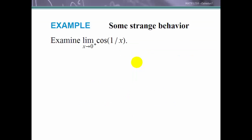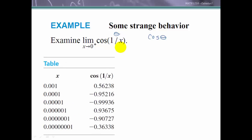Let's look at something interesting. We have the limit as x approaches 0 from the right — that is, 0⁺ — of cos(1/x). Let's think of cosine θ, where θ could equal 1/x. We know cosine θ function values are always going to be between -1 and 1. As we approach 0, we couldn't directly evaluate this by putting in 0 because we would have something undefined. So let's look at a table of values with x values closer and closer to 0.